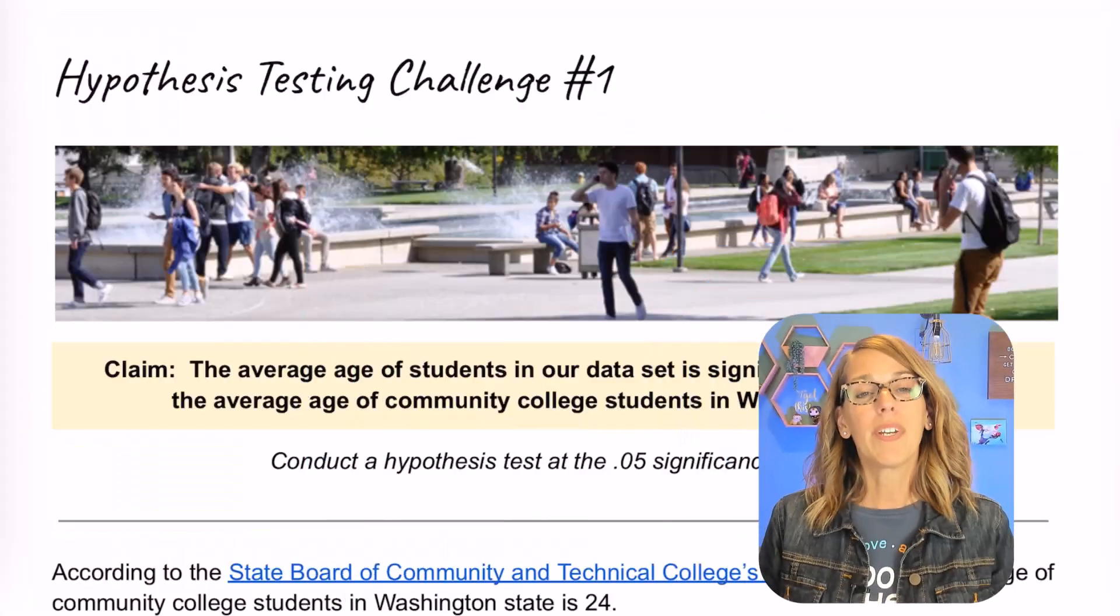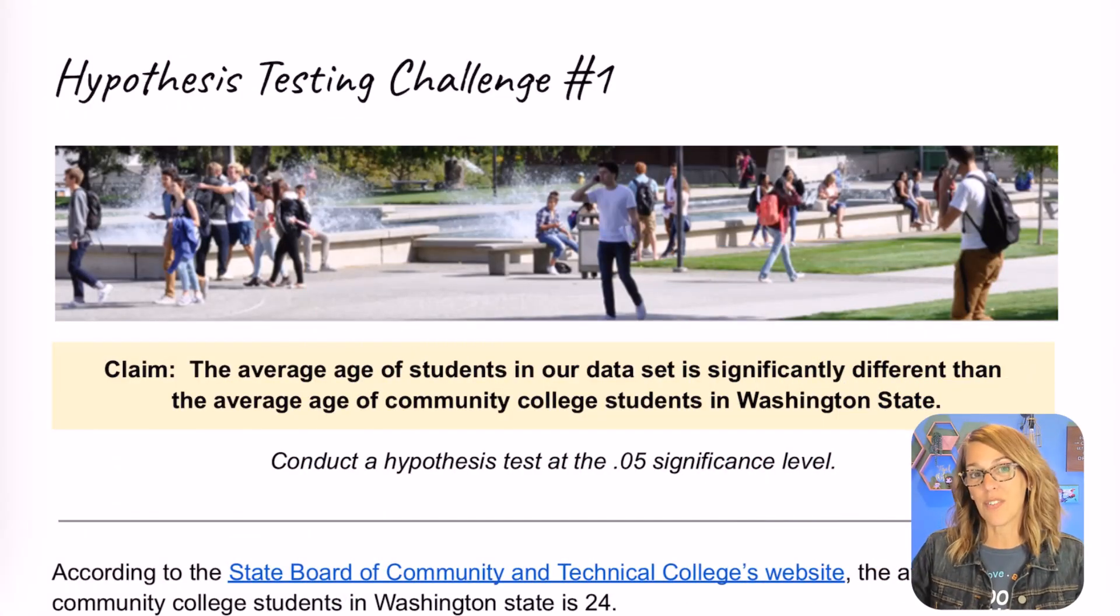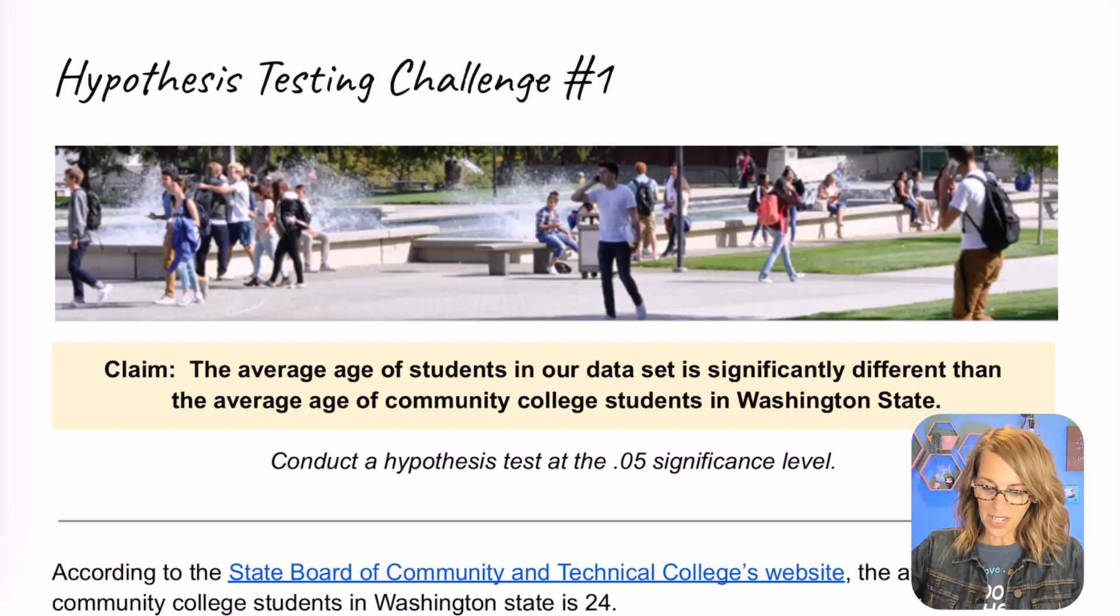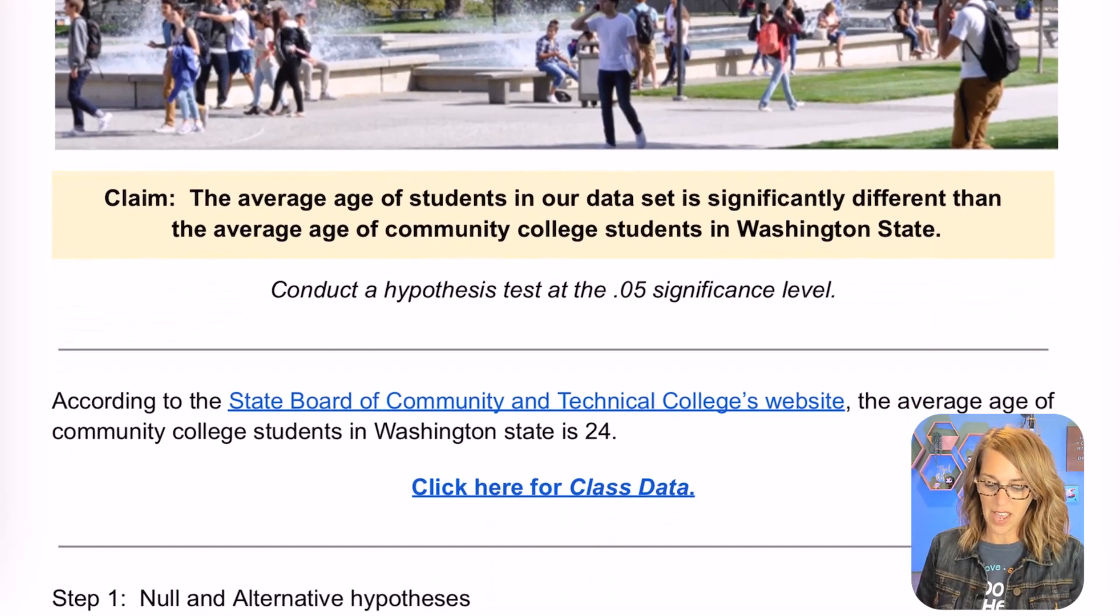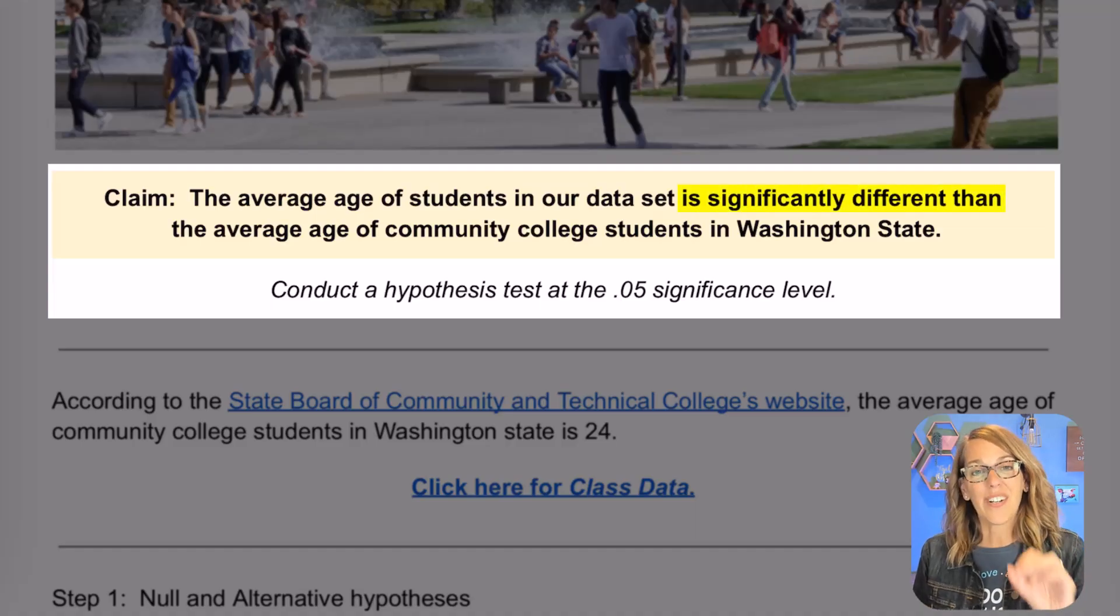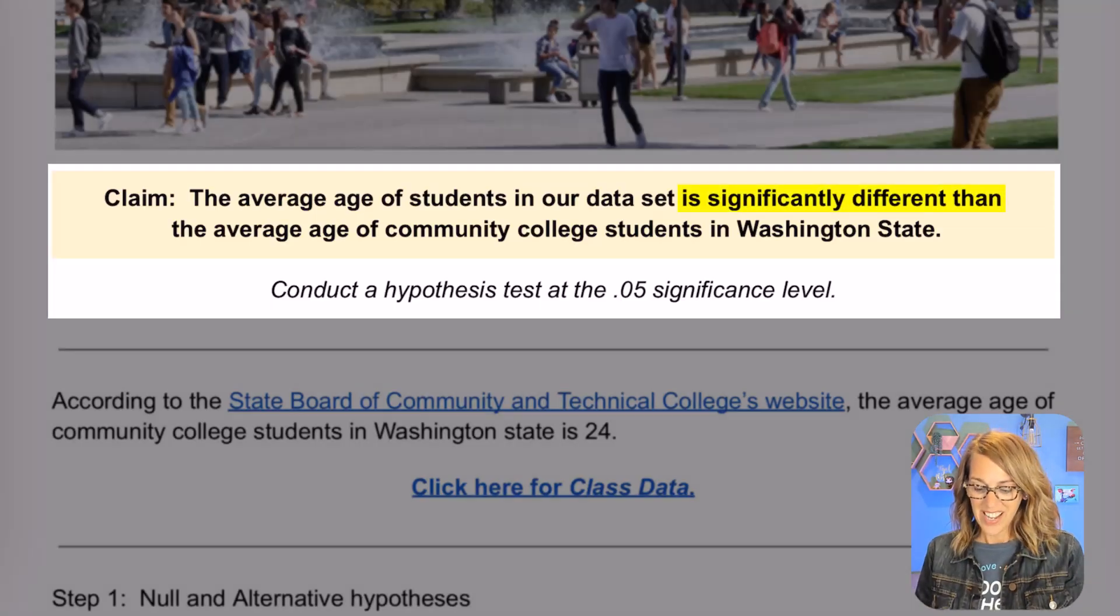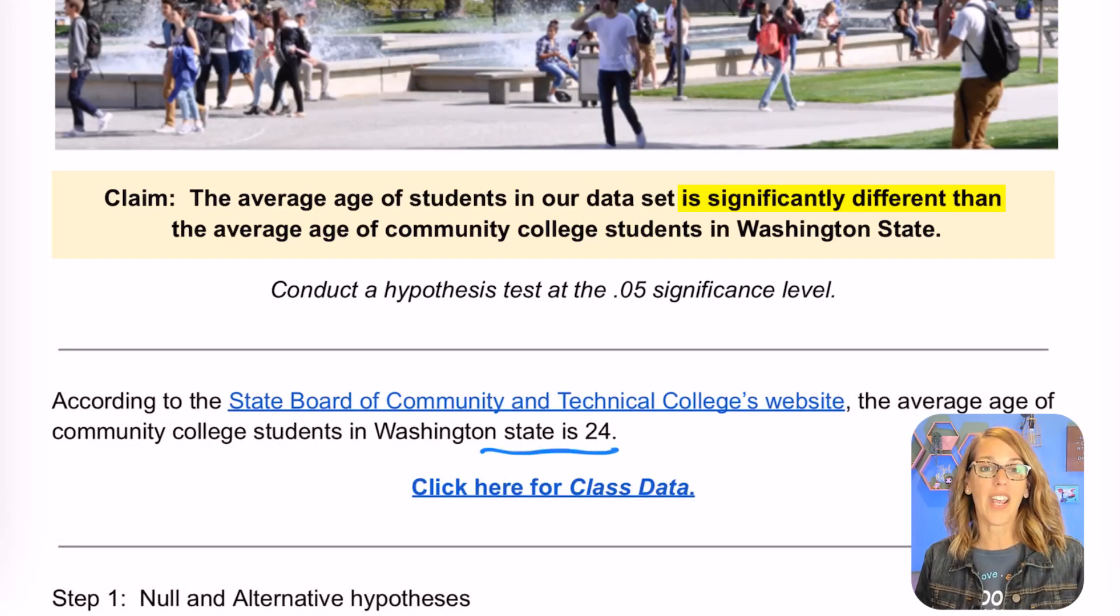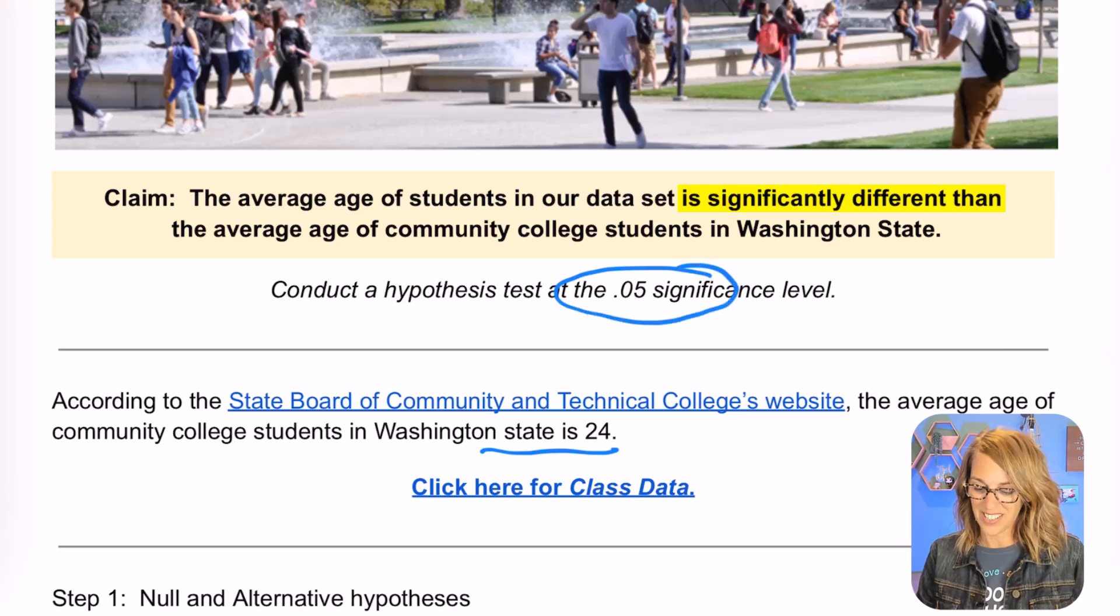We're going to do a t-test. I'm going to use this assignment that I gave to my students just last week as an example. For this particular challenge, we want to know if the average age of students in our data set is significantly different in age than the average community college student in Washington state. According to the state website, that average age is 24. We're going to test at the 0.05 significance level.